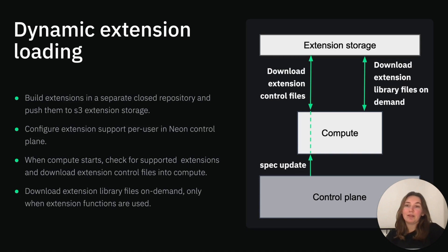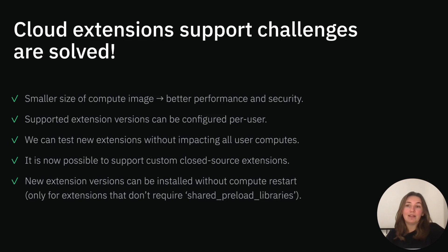At Neon, we solved all these issues by introducing dynamic extension loading. The idea is to build extensions in a separate repository and push the resulting files into an S3 bucket instead of including them in the compute image. Then, we can configure a list of supported extensions for each user in the Neon control plane. When compute starts, it checks for supported extensions and downloads control files into the compute. This operation is fast because control files are usually very small. After that, compute works as usual — it will download extension library files on demand only when extension functions are used. Dynamic extension loading solves most of the problems listed above. Smaller compute images lead to better performance and security.